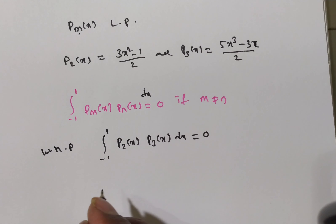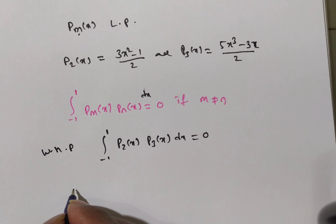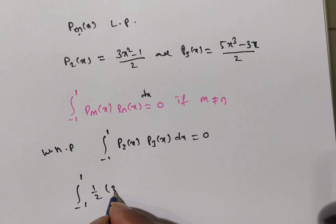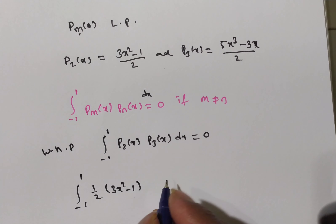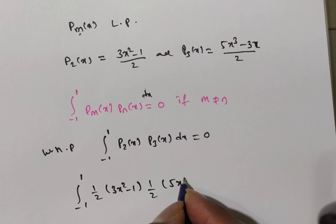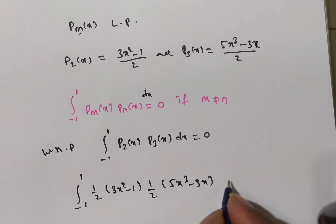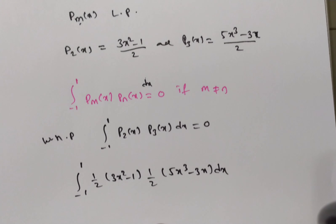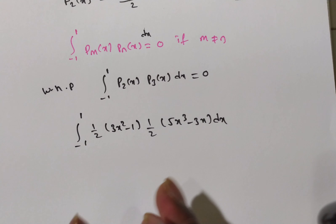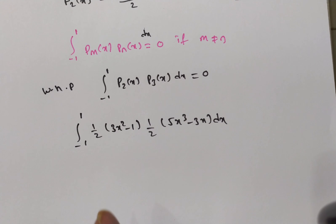Now, substitute these two values. The integral from minus 1 to 1 of: P2 of X equals (1/2) times (3X squared minus 1), and P3 of X equals (1/2) times (5X cubed minus 3X), all times dx. Now we have to simplify this and prove that this value is 0.